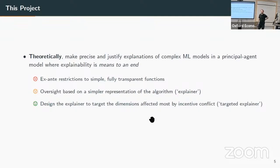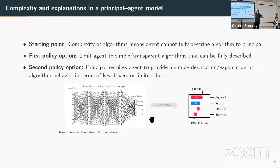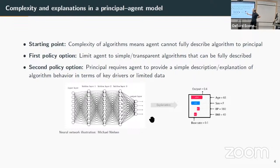We're going to first theoretically show something, and I want to end up saying there's a second option—not just limiting to simple things, but letting you take the complex choice while requiring you to give me some information about how your algorithm works so I can determine whether it's acceptable. The machine learning literature has produced many ideas for producing simple descriptions of complex algorithms—key drivers of output, their importance, direction of impact—but most are not motivated by policy objectives but by mathematical axioms not necessarily mapping to welfare or principal-agent sense.